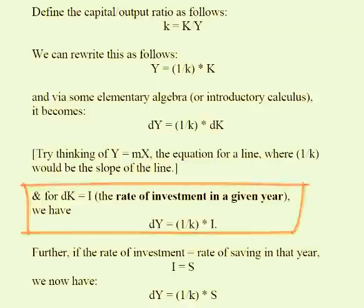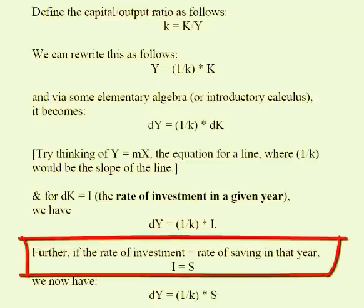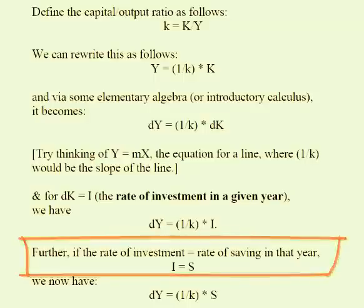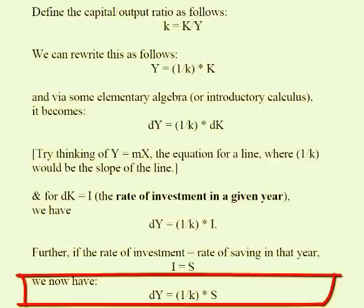We're also going to assume that the country's investment comes from its savings: I equals S. Obviously, we can change that, and this is one of the criticisms of the theory. Investment doesn't have to come only from local savings; it can come from borrowed savings internationally. In any case, assuming that I equals S, we can substitute for I in the equation. So we have dY equals 1 over k times S, the rate of saving in a given year.